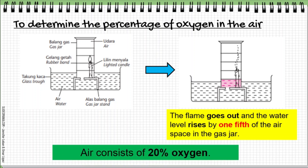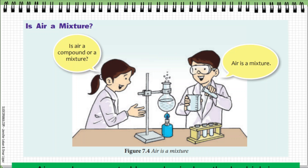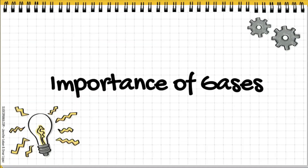From this activity, it shows that one fifth of the air contains oxygen, so as a conclusion, air consists of about 20% oxygen. Air is a mixture, and air can be separated by a physical method which is fractional distillation.